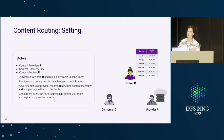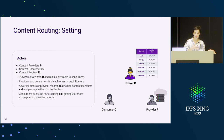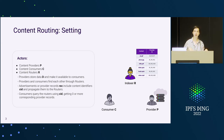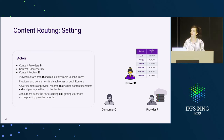Just to set up the actors — we had this morning the talk by Juan. We have the content providers, the content consumers, and the content routers, and each one has a very specific role. The providers store the data for the consumers and make it available at any moment. But in order to find the right provider, a consumer will need to talk to a router — an indexer R. Providers should advertise their records to this router, and consumers will query content IDs in order to find out what the closest provider is for the data.